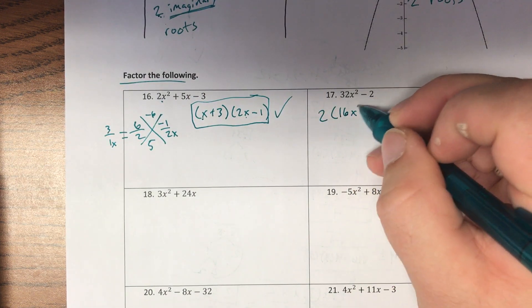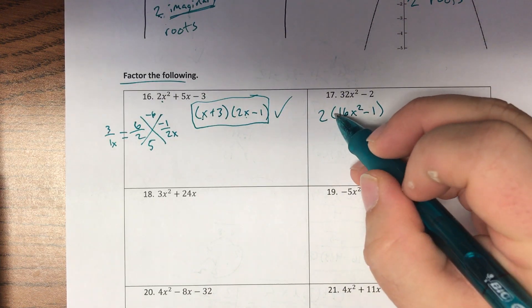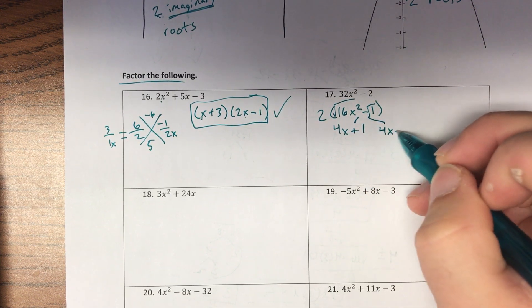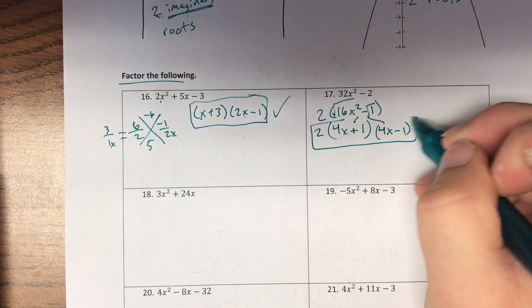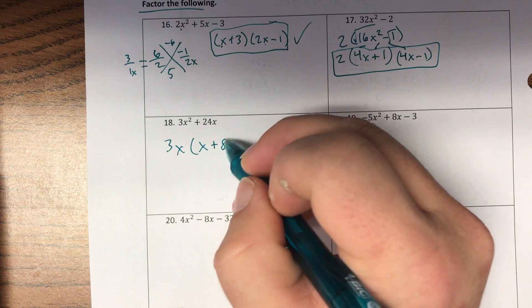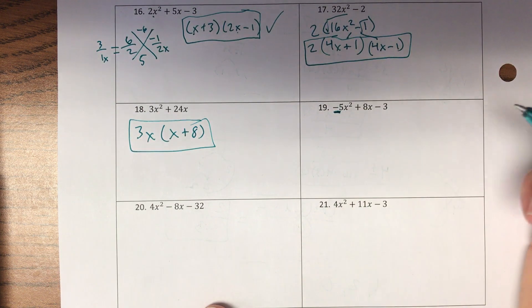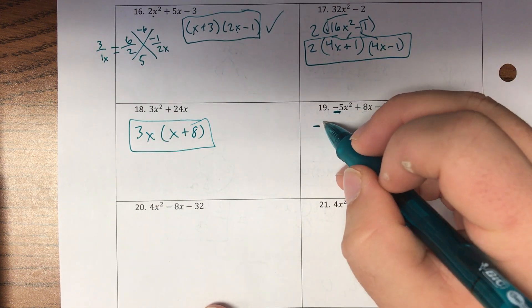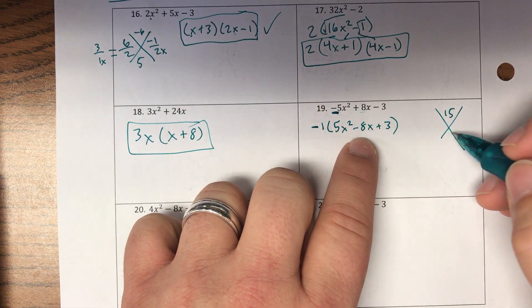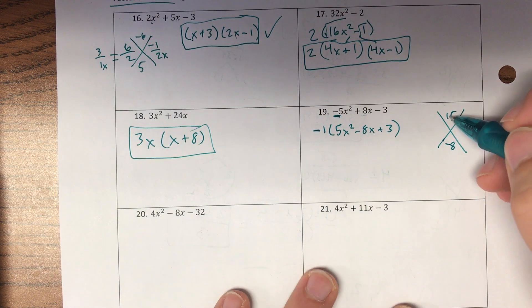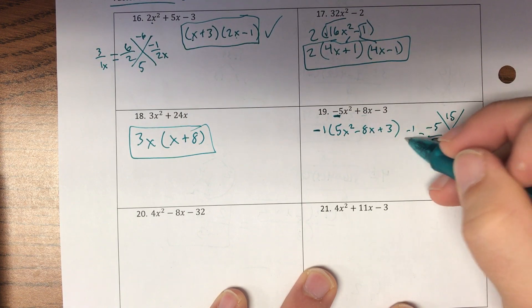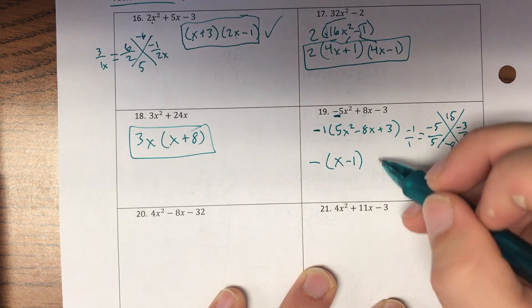Number seventeen — take out a 2 first. Then check difference of squares: √(16x²) = 4x, √1 = 1. So we get 2(4x + 1)(4x − 1). Number eighteen — take out 3x, leaving 3x(x + 8). Number nineteen — I want my a positive, so take out a negative 1: −(5x² − 8x + 3). What multiplies to 15 and adds to −8? Negative 5 and negative 3. Dividing by 5 gives −(x − 1)(5x − 3).